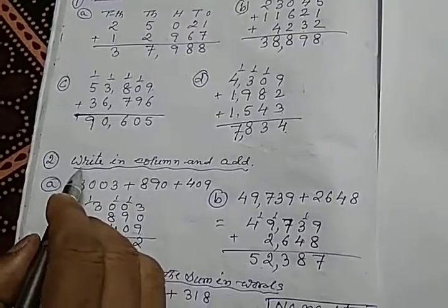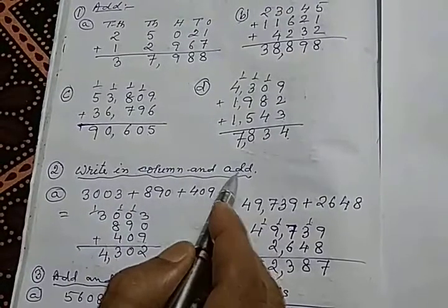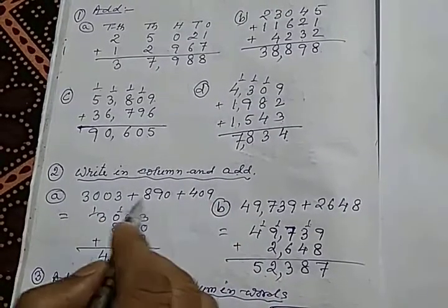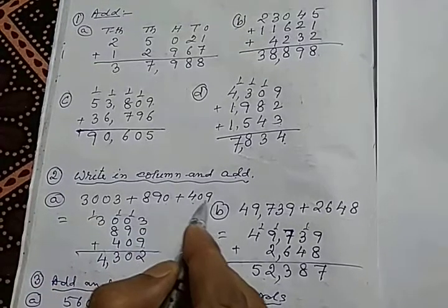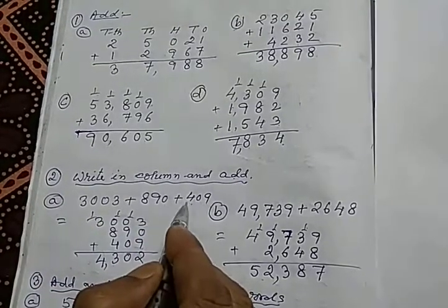Now we will come to second number which means as per instruction, write in column and add. These numbers, 3,003, 890 and 409 plus plus is written. That means these numbers are written in series.